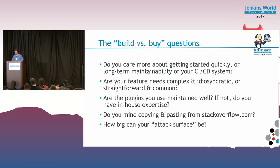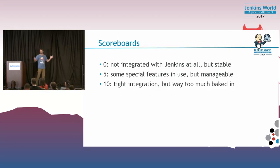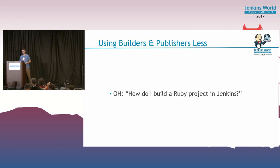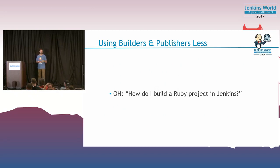I'm going to assign a somewhat arbitrary score from zero — meaning it's not even part of Jenkins, so nothing you do to Jenkins could break it, but you don't get integration advantages — to ten, meaning you're all in and you better hope what you want to do is perfectly aligned with how the feature was supposed to work. I'll start talking about builders and publishers — basically build steps, things you'd organize in a sequence in a freestyle project or in a pipeline as function calls.